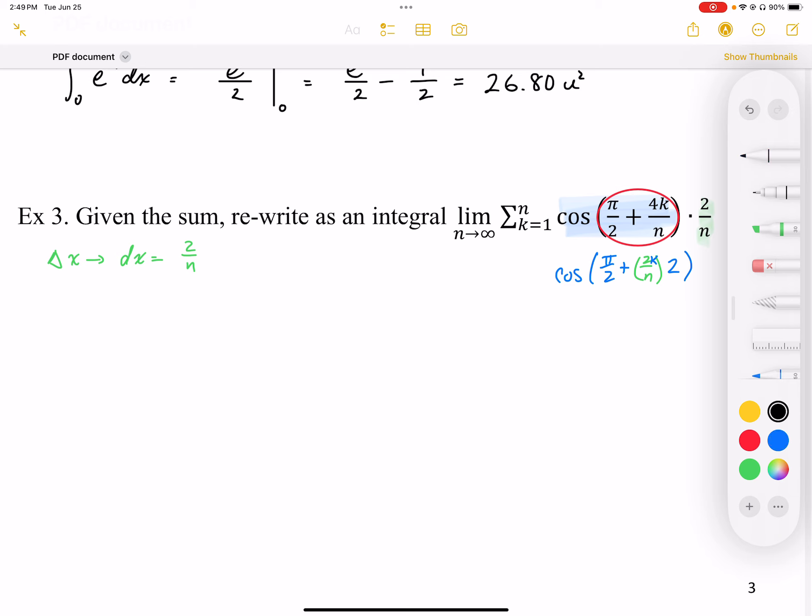I'm going to start writing my integral notation. I have a cosine function. It looks like my x is going to go up by 2x's, so it's starting at pi over 2 plus 2 times—and that 2k over n represents my x expression.